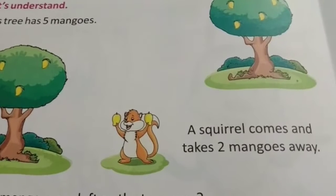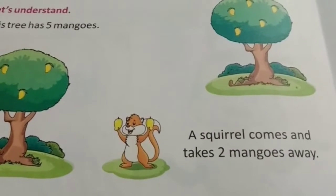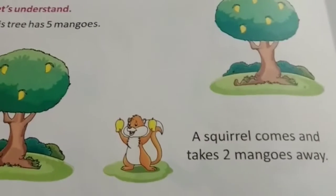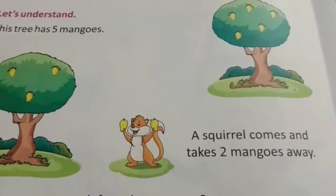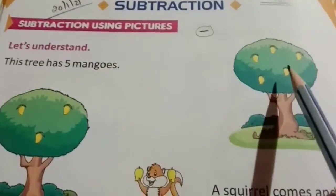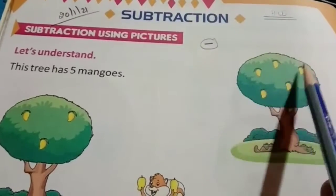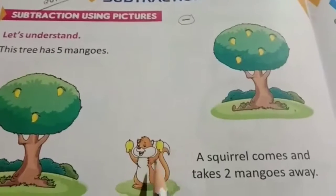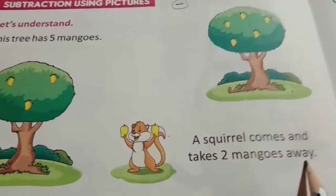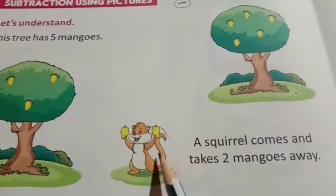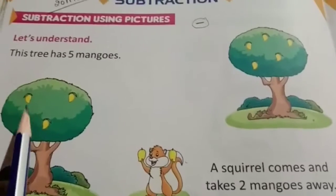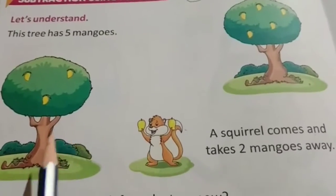When we subtract, the number becomes less — fewer. So in subtraction, we take the smaller digit away from the bigger one. For example: this tree has five mangos. Look here — this tree has how many mangos? One, two, three, four, five — five mangos. From these, two mangos this squirrel has taken.